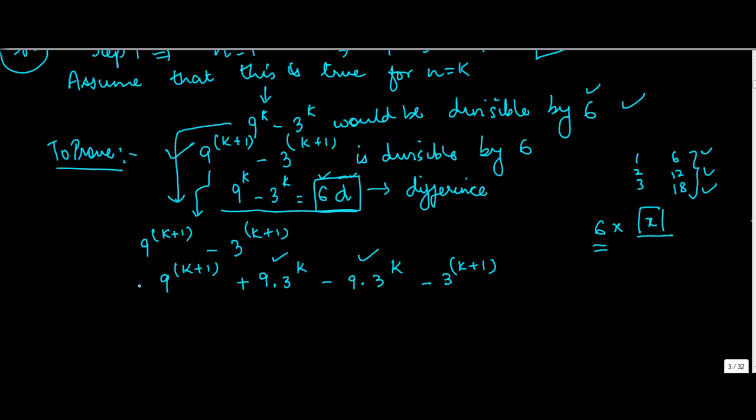You know why I did this? See, 9^(k+1) can be written as 9^k times 9. If I add and subtract, changing the order, I write it as 9^(k+1) minus 9·3^k plus 9·3^k minus 3^(k+1).